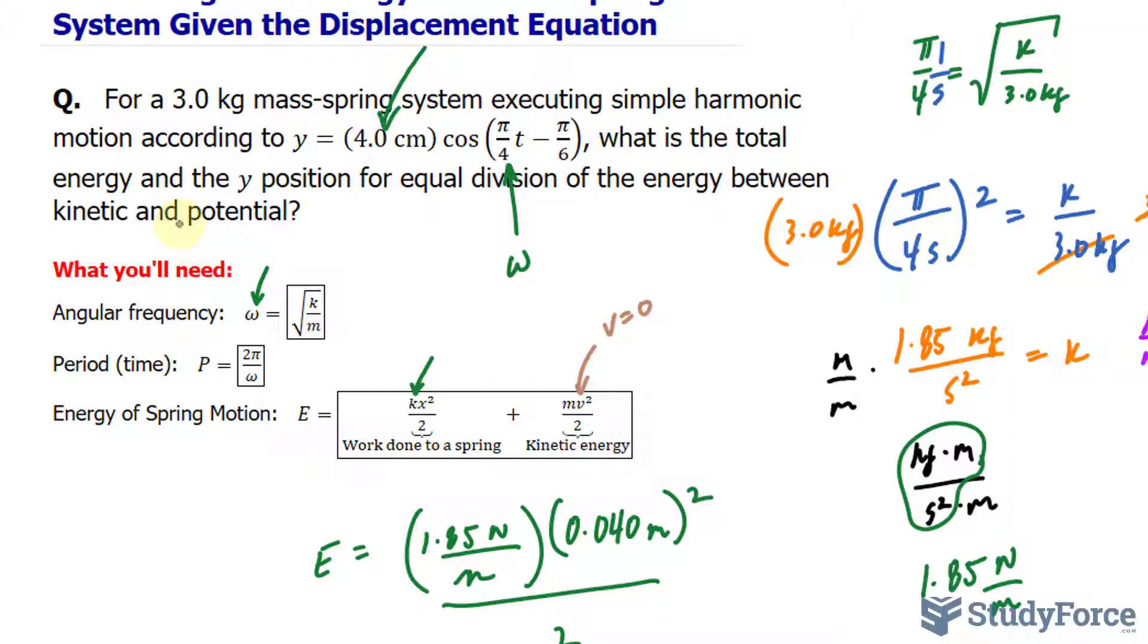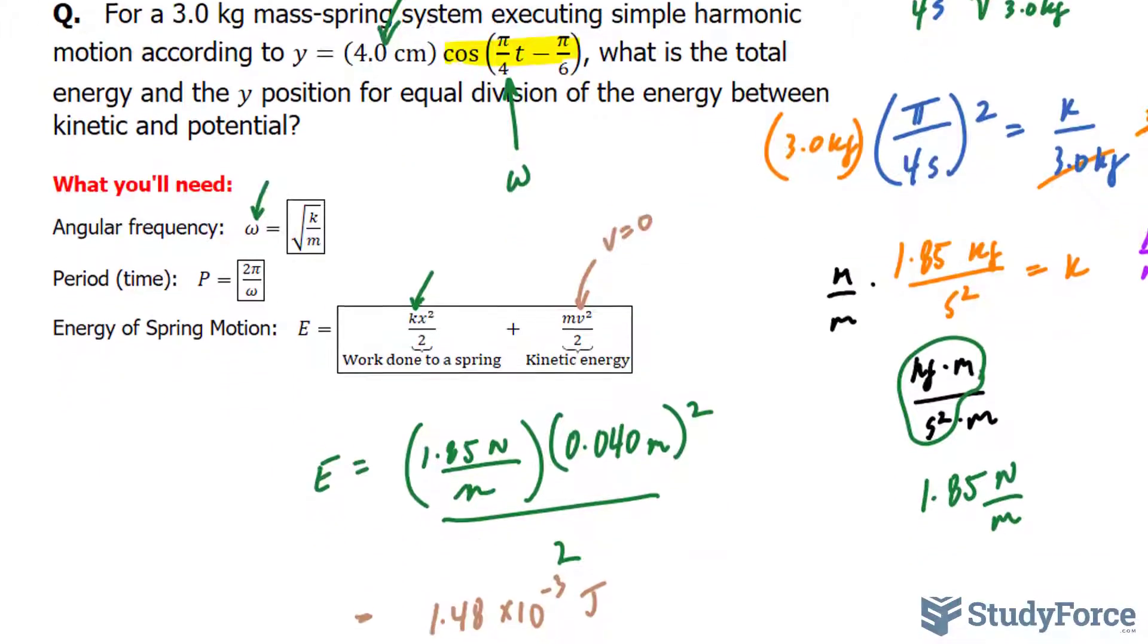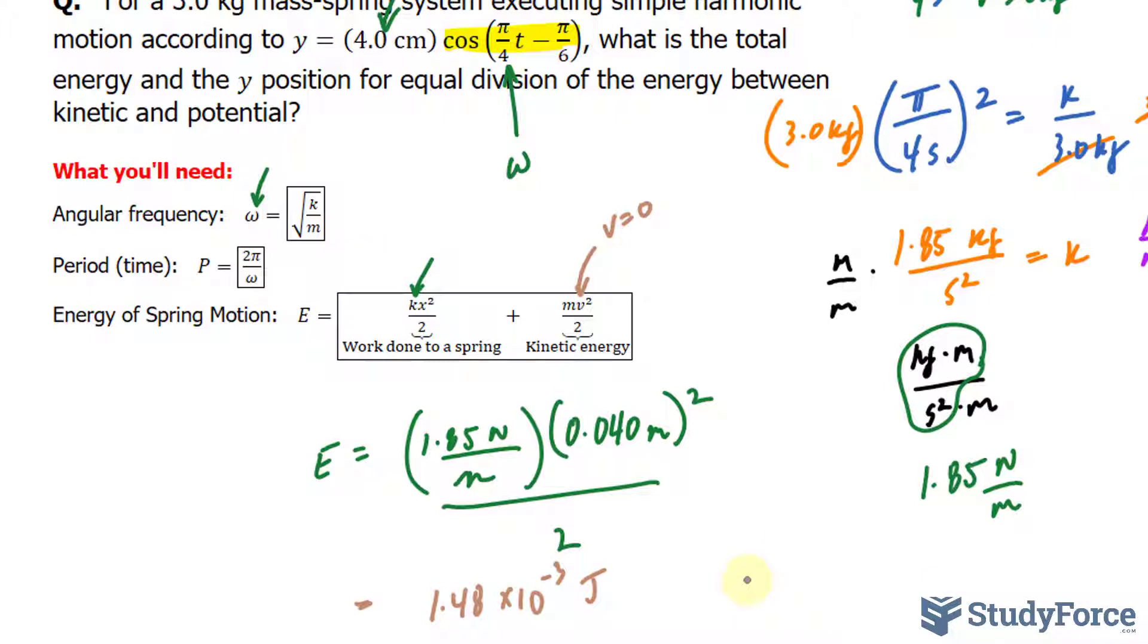For the second part, they want the position for when the kinetic and potential are equal. To do this one, you need to use a little bit of thinking, a little bit of logic. So half the energy, half the work done to the spring, will happen when this part is equal to half, because only if this part is equal to half will we get half the amplitude. Therefore half the displacement will lead to half the potential energy. So using that idea alone and this formula right here, we can say that E is equal to K.